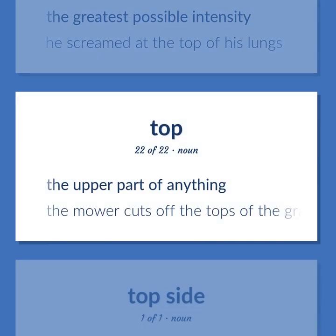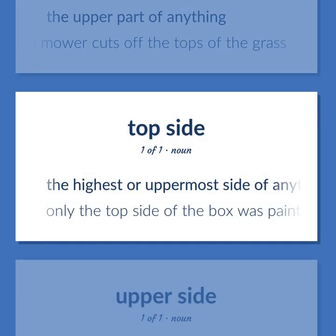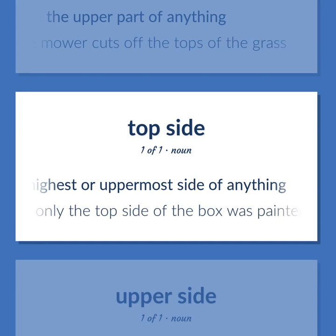Top: the upper part of anything. Example: the mower cuts off the tops of the grass. Also: the highest or uppermost side of anything. Example: only the top side of the box was painted.